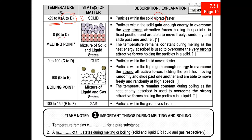From B to C is the flat part of the graph, and what happens is melting — that is your melting point. During the melting point, there is a mixture of solid and liquid states. You are still heating the substance, but the temperature remains zero degrees Celsius. During melting, the particles will gain energy.